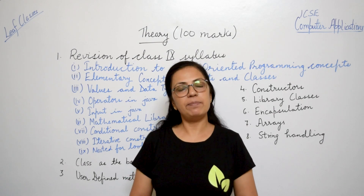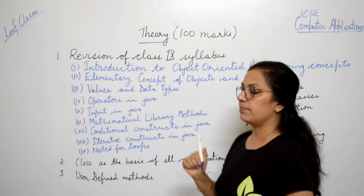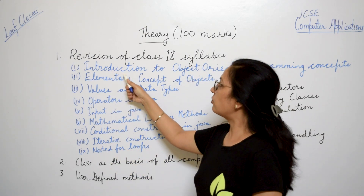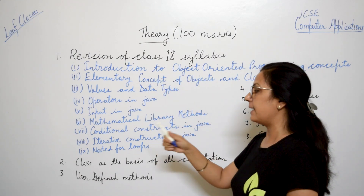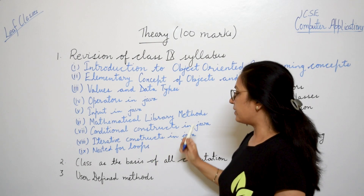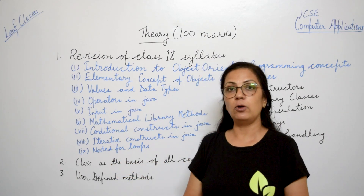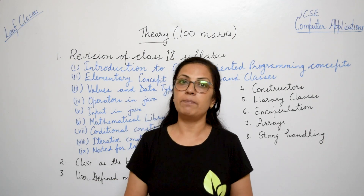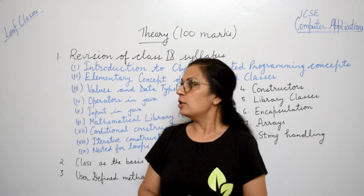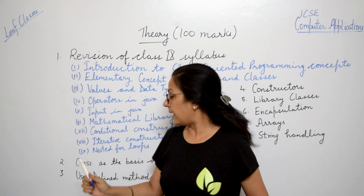If you check the syllabus for the 2023 examination, the first topic is revision of class 9 syllabus, and this topic contains nine subtopics. It starts from introduction to object-oriented programming concepts till nested for loops. I suppose all of you have prepared that first topic — iterative constructs in Java — in class 9. The last topic, nested for loops, was removed from the syllabus for the previous session, but now in all schools this is already done.